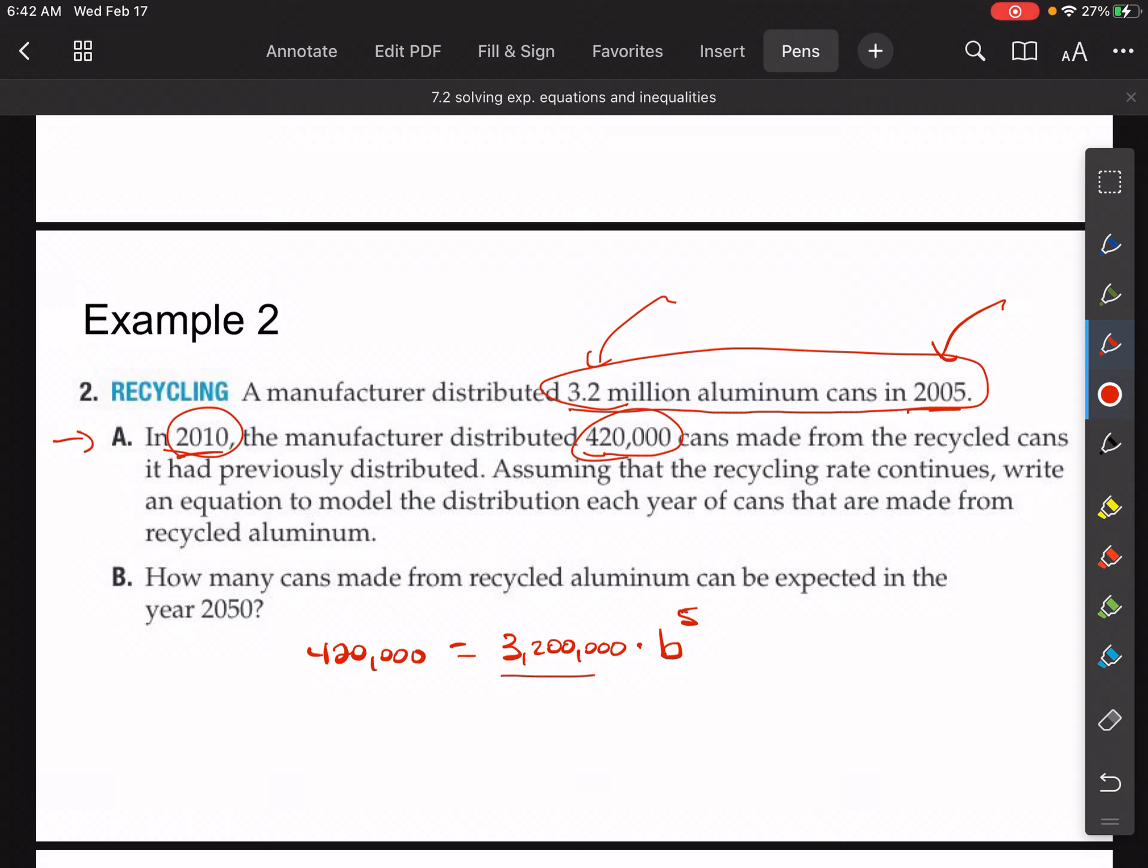So in this particular case, our final amount here will be the latest amount. So in 2010, it's 420,000 cans. So I can say 420,000 is equal to the original amount, 3,200,000, times B. We don't know what the common ratio is. We're trying to find that, all to the time frame. The time frame is five years. So once I know B, I can come up with an equation for this thing. So let's divide both sides by 3,200,000. When we do that, we end up with 0.13125 is equal to B to the fifth.